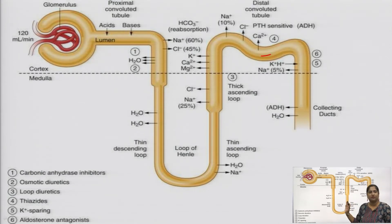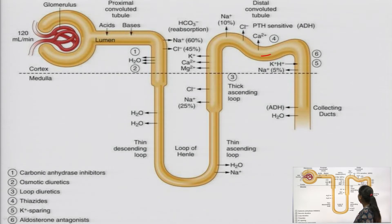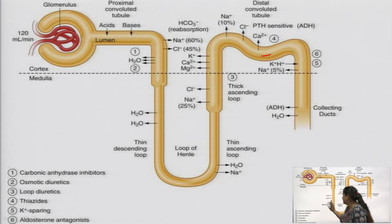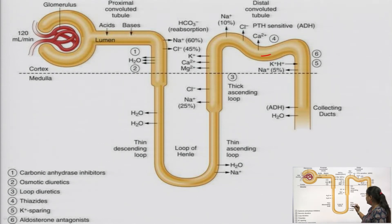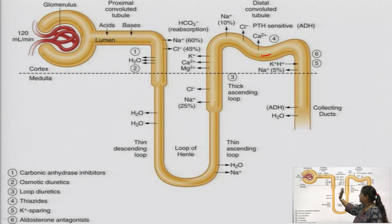This is the full structure of the nephron. The uppermost part — the glomerulus, the proximal convoluted tubule, and the distal convoluted tubule — are covered inside the cortex. Whereas in the medulla region there is the thin descending loop of Henle, thin ascending loop of Henle, and thick ascending loop of Henle. As you can see in the diagram, some ions are moving out of the nephron and some are being reabsorbed.